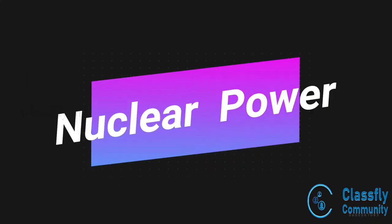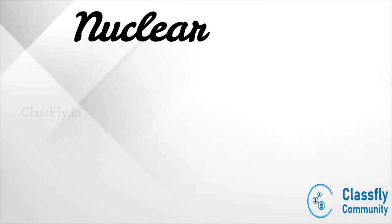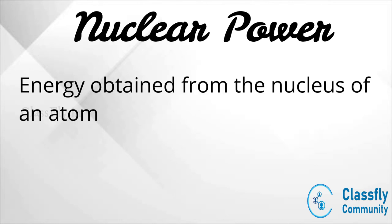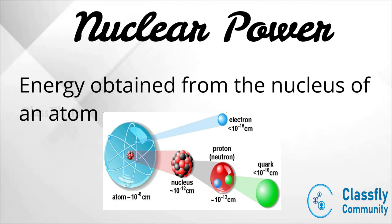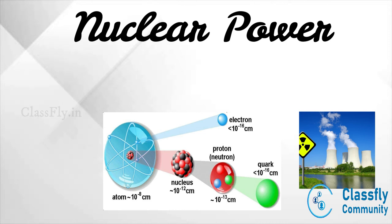Next, we move on to nuclear power, which is generated by utilizing the energy in the nucleus of an atom. Atoms are tiny particles that store a large amount of energy in their center known as the nucleus. This nuclear power is obtained by the splitting of atoms through a process known as nuclear fission.